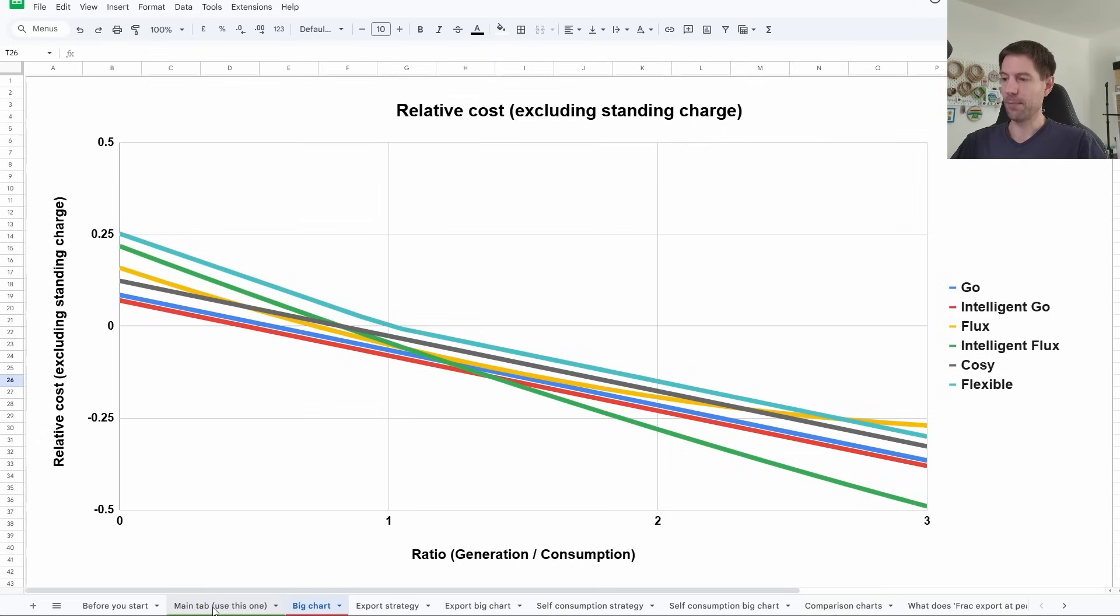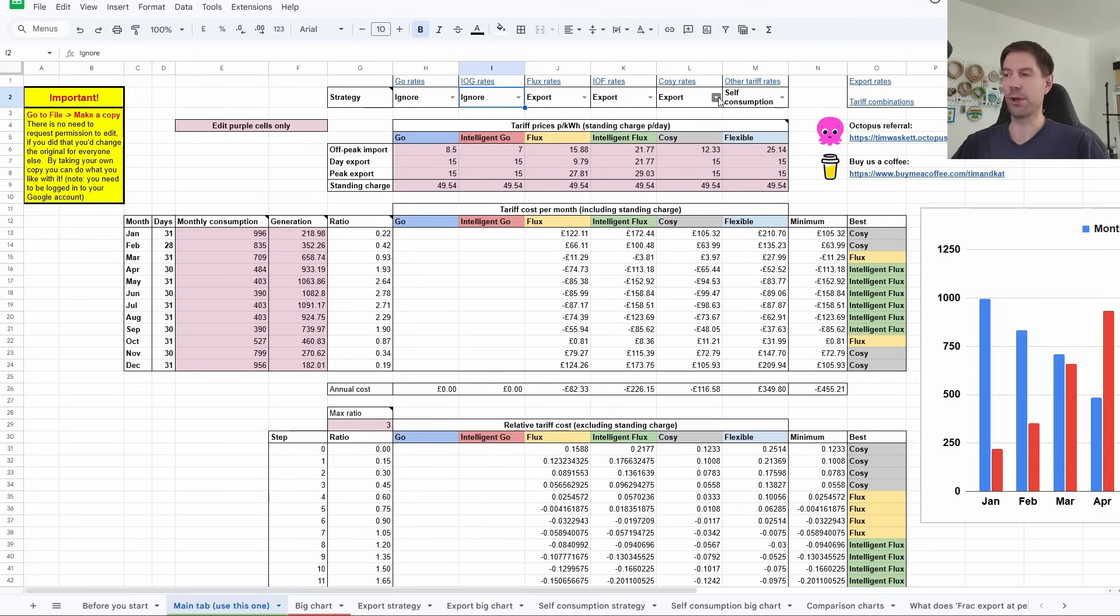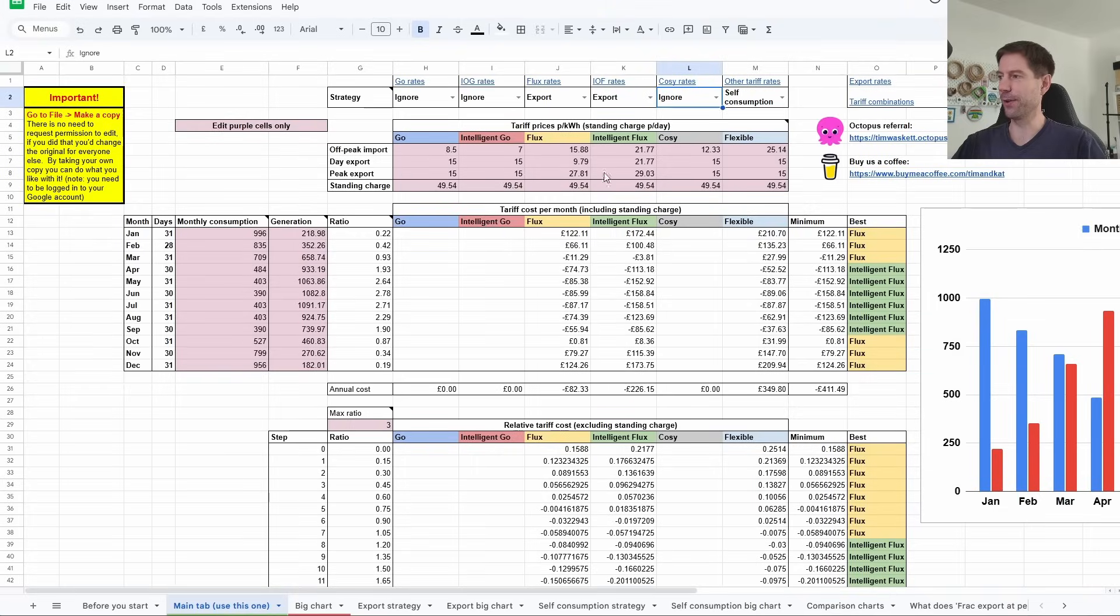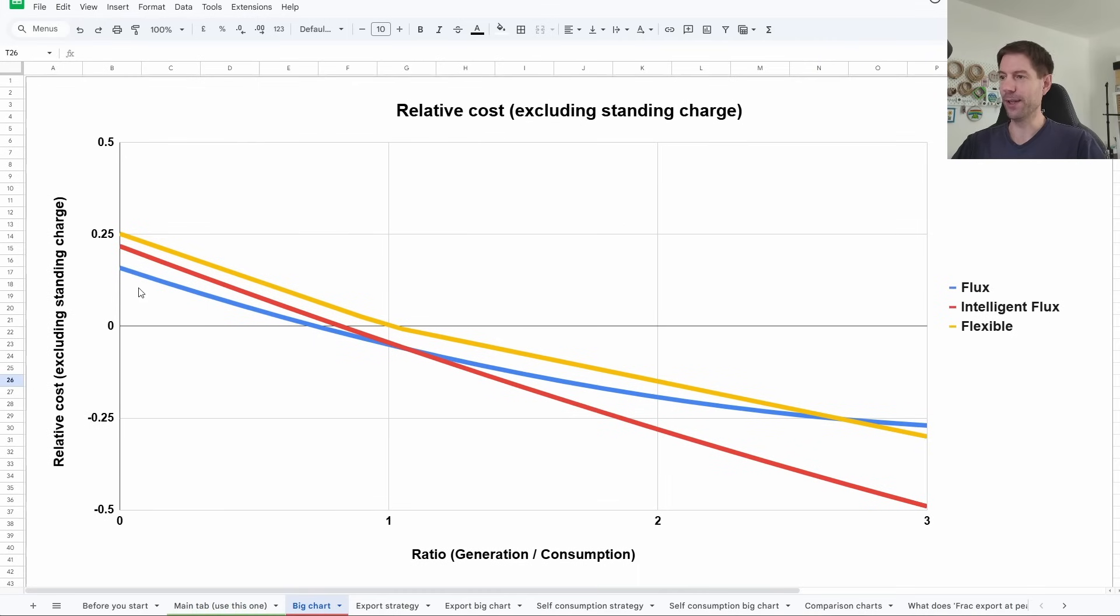That's the way you read this chart. Now if I go back to the main tab here, if you're unable to get a particular tariff—for example, if you don't have an EV you wouldn't be able to get either Go or Intelligent Go—you can go to this dropdown and simply click ignore. I'll do that for both of these. And let's say you don't have a heat pump either, you've just got solar and batteries, then you wouldn't be able to get Cozy, so let's click ignore on that. That removes those tariffs from the chart. If I click on here you can see it's left behind only the three tariffs that are relevant to you: Flux, Intelligent Flux, and the Flexible tariff. Annoyingly the colors change, which I haven't been able to resolve, so they no longer match the color coding on the main page, but let's roll with it for now.